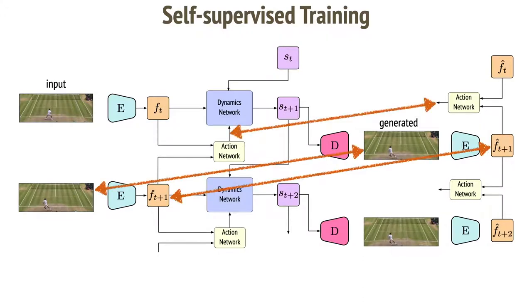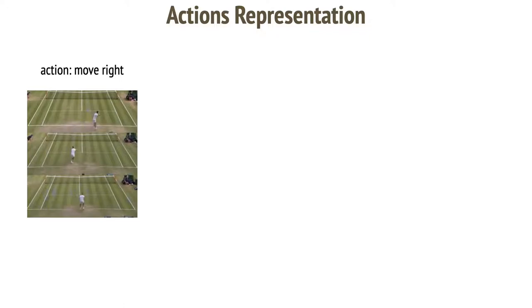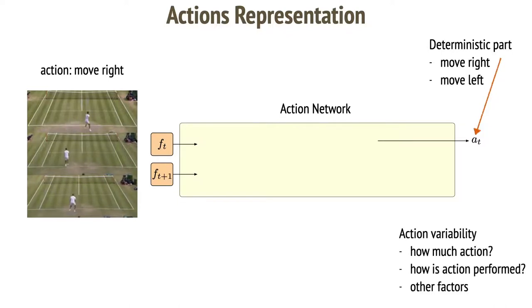The main caveat is in the action representation. For example, here we see three instances of the same action, move right. Different agents can perform the action differently, hence a single action class label is not sufficient. Actions consist of the deterministic part describing which action should be used. Discrete action label does not account for how much action is performed, action speed, and other factors. To address this, we add action variability. Recall that our model is unsupervised. We don't supervise any of these action parts. So how to learn them?